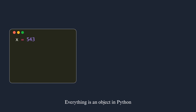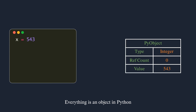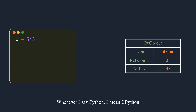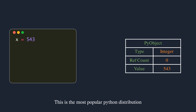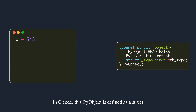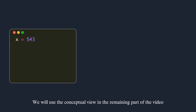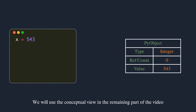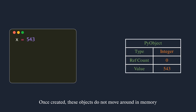Now let's see how similar operations work in Python. You don't need to specify a data type when creating a variable — everything is an object in Python. When you assign some value to a variable, a new object is created in the heap memory. When I say Python, I mean CPython, the reference Python interpreter written in C. PyObject represents the base structure for all Python objects, defined using a struct in C. We are interested in the type information, reference count, and the actual value fields.